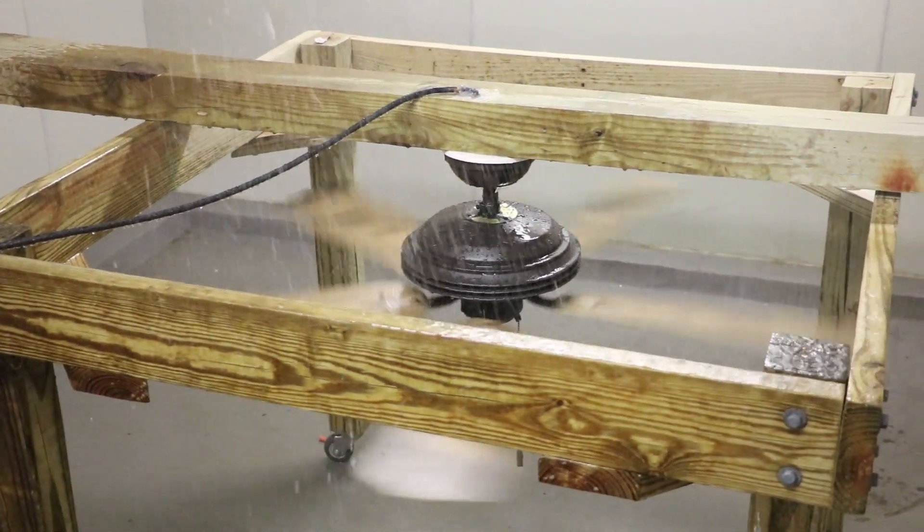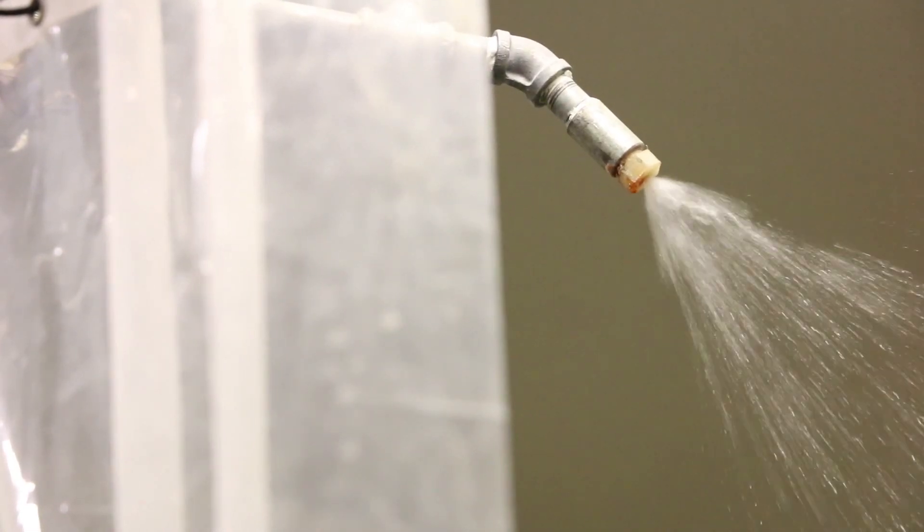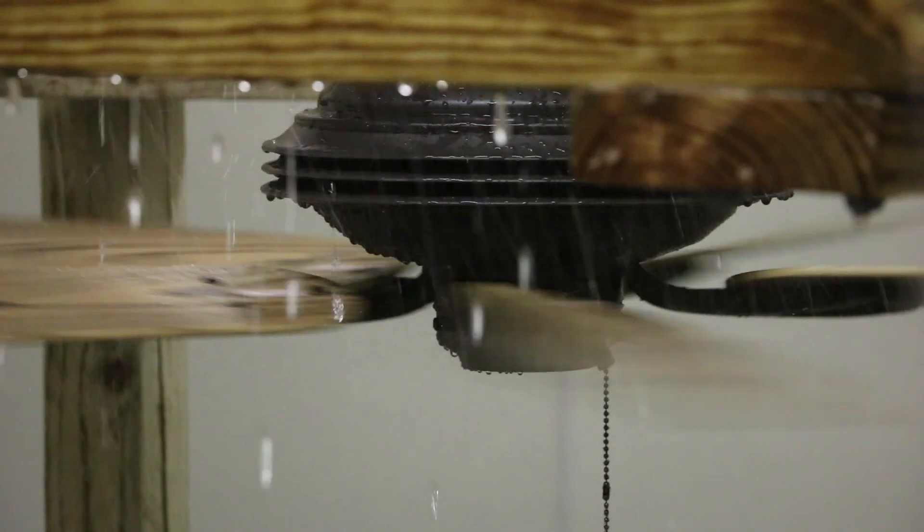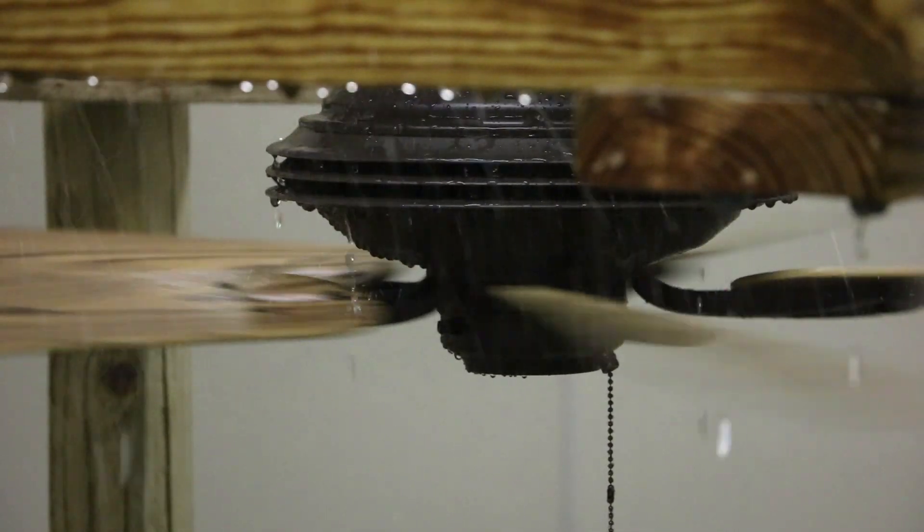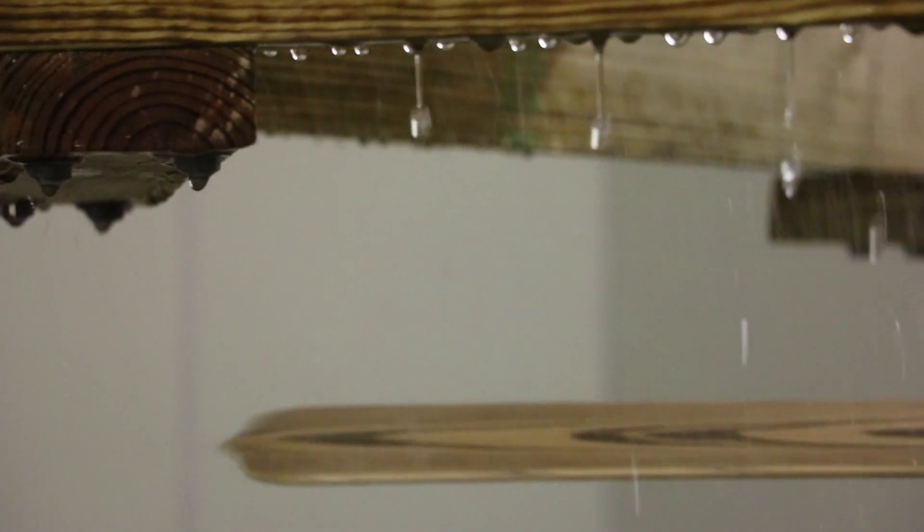The rain test is for an outdoor wet rated fan. It's a UL requirement that you perform this test, and we actually rain on the fan for four hours at a time with the fan running, hooked up to electricity and everything, to make sure that the fan is safe if you hang it outside and it rains on it.